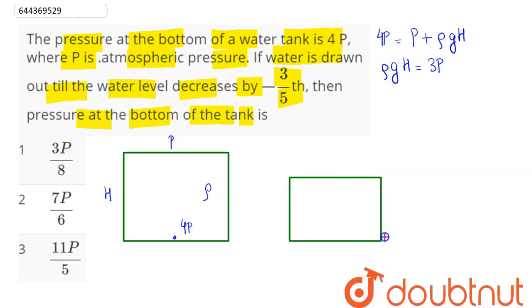The pressure at the bottom of the tank is being asked. Pressure decreases by three-fifths means now this height will be two-fifths of the initial height, that is 2/5 H.